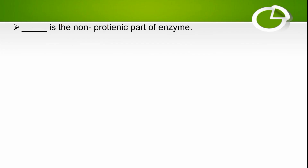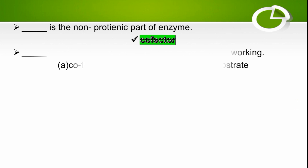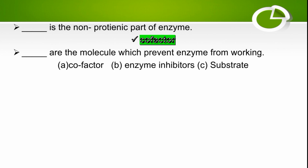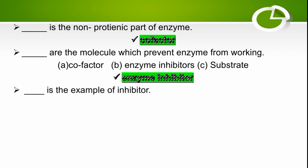The non-proteinic part of an enzyme is called a co-factor. Co-factor is the non-proteinic part of an enzyme which is attached to the enzyme for proper function. The molecules which prevent enzymes from working are called enzyme inhibitors — the right option is enzyme inhibitor, which inhibits the enzyme's function.